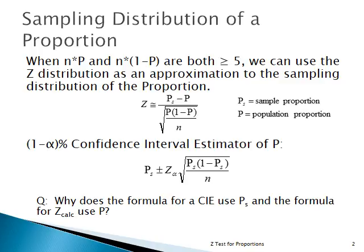As always in the formula for Z, what population parameter are we using? The one under the null hypothesis. We're taking P-sub-s, the sample proportion, minus P. We don't know the population proportion P, but we're doing a hypothesis test, and that hypothesized value is what we use.